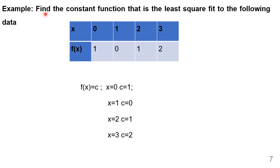For the second problem, we need to find the constant function that is the least square fit to the given data. Since it is a constant function, we define f(x) = c.